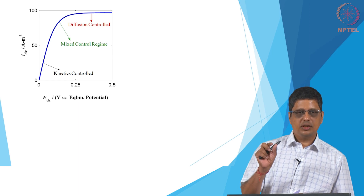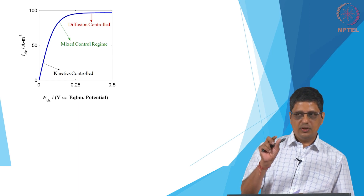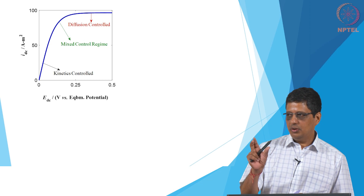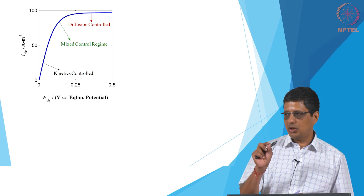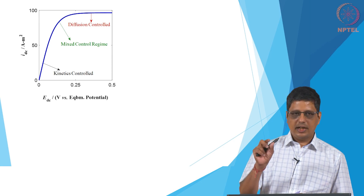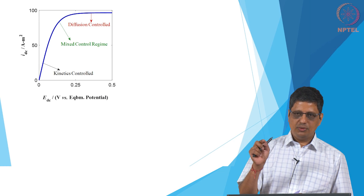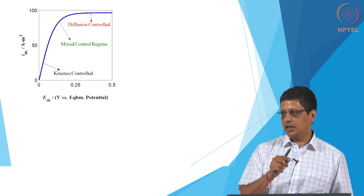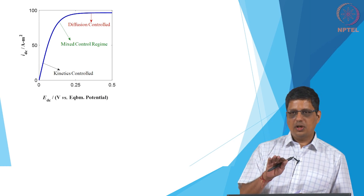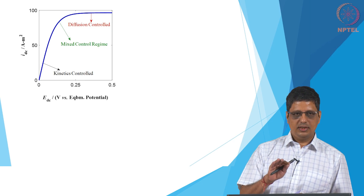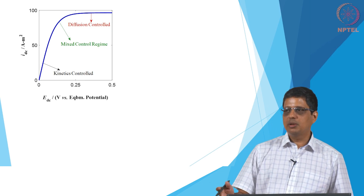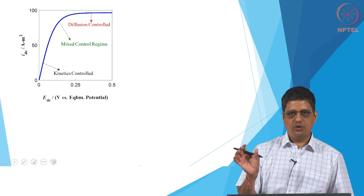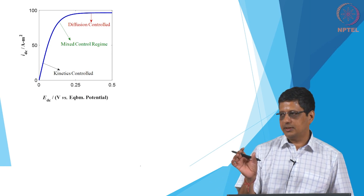We have special electrodes called reference electrodes. We use the reference electrode and the working electrode, and the reference electrode should offer low resistance or low impedance and should not change in potential. Whenever current comes through, we need to collect the current in a third electrode called the counter electrode. Normally we use a 3-electrode cell for electrochemical studies. We also saw that we use supporting electrolyte to minimize the resistance of the solution, called solution resistance.